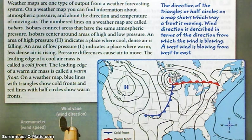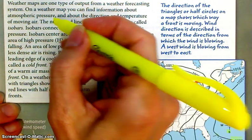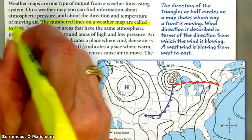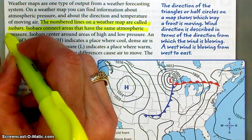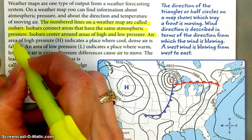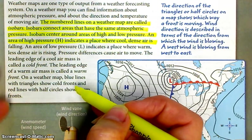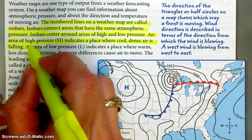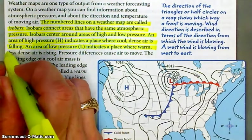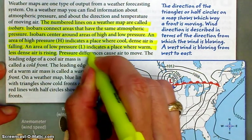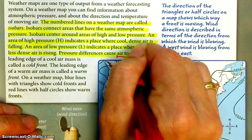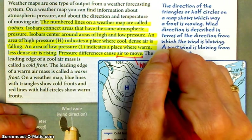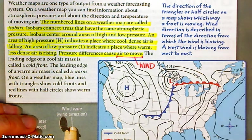Okay, so let's stop and do some highlighting. The numbered lines on a weather map are called isobars. Isobars connect areas that have the same atmospheric pressure. Isobars center around areas of high pressure and low pressure. An area of high pressure indicates a place where cool, dense air is falling. An area of low pressure indicates a place where warm, less dense air is rising. Pressure differences cause air to move. Remember that air moves from high pressure to low pressure. And if air is moving, that is wind.